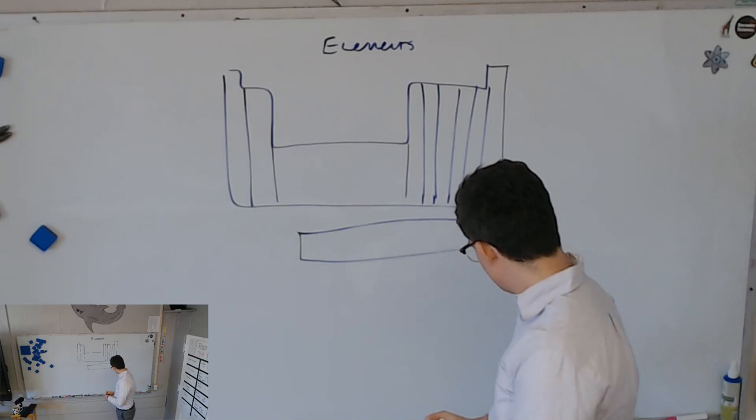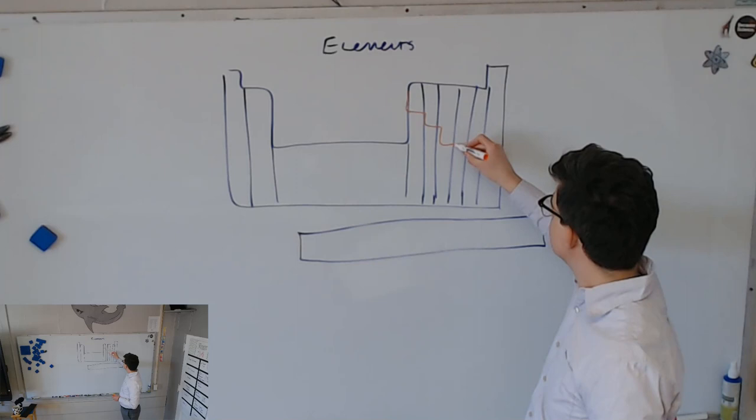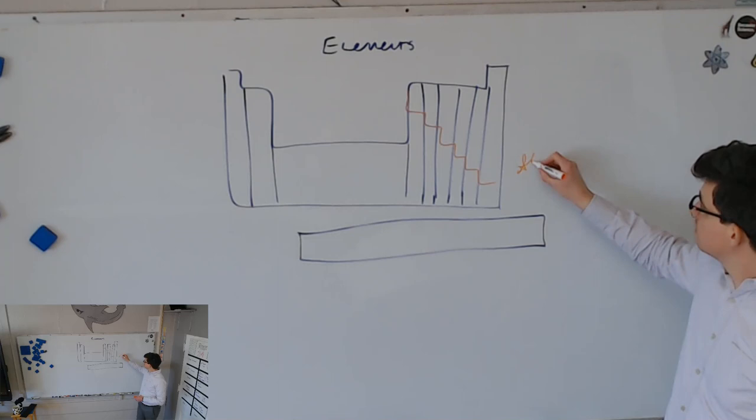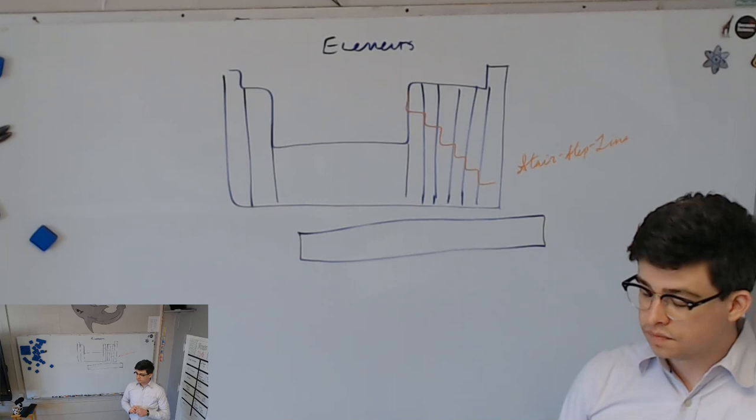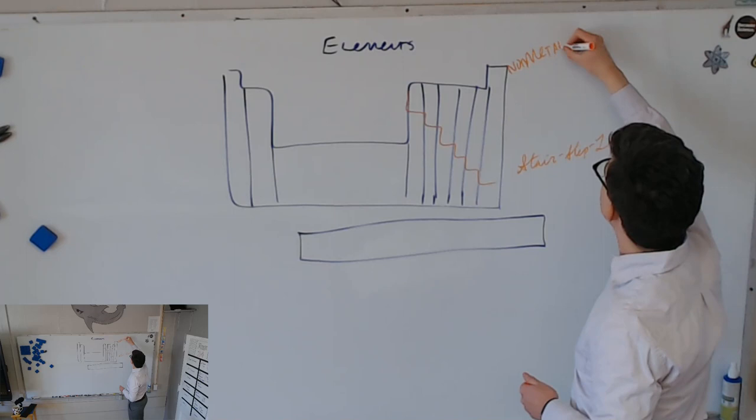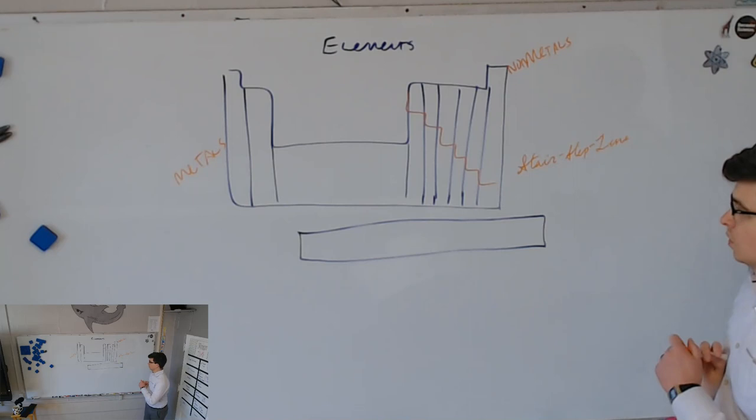For instance, we're going to start with, you'll find on many periodic tables, there's this kind of stair-step line. What's this orange thing I just drew? Stair-step line. That's not a very creative name, but that's what I've always heard it called. And this separates effectively the what from the what? The metals.